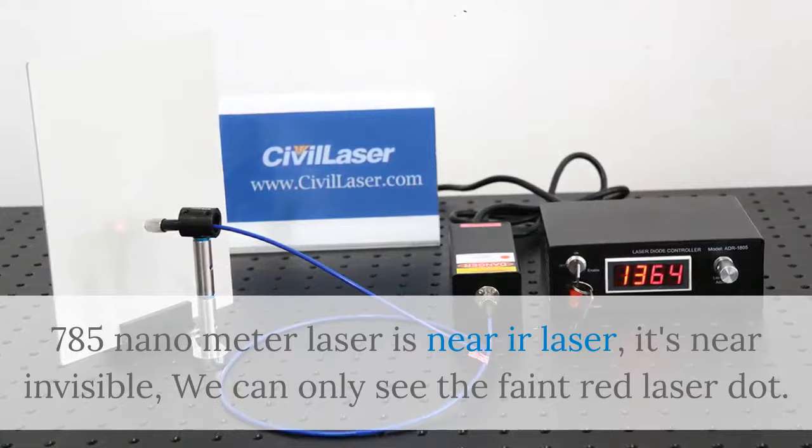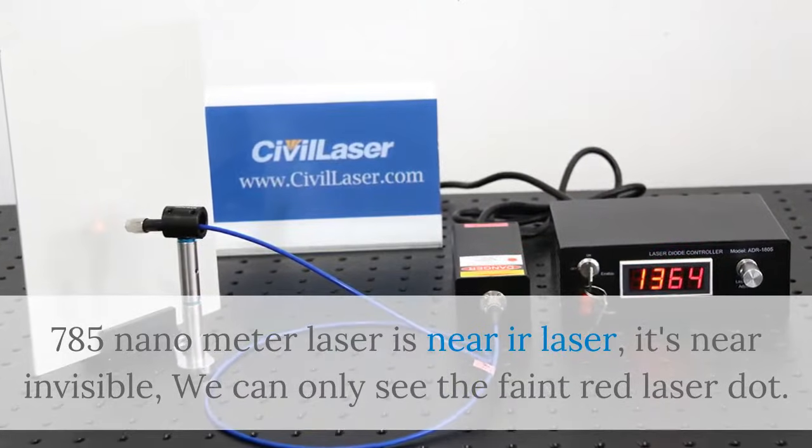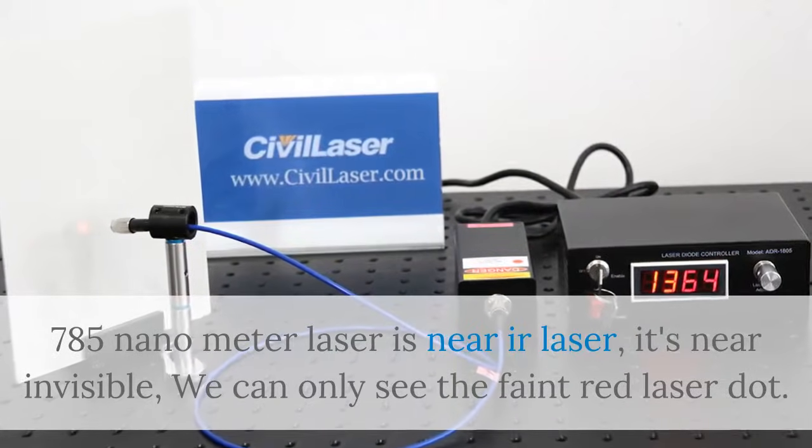785 nanometer laser is near IR laser. It's near invisible, we can only see the faint red laser dot.